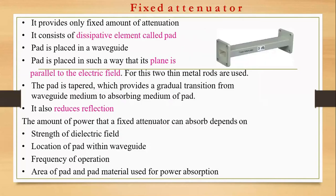For fixed attenuation — say 3 dB — you will only get that 3 dB of attenuation. Suppose I give an input of 32 dB as the input power being transmitted. When I take the output across the output side, I should be getting 3 dB less — so for a 32 dB input, I'll be getting 29 dB output, meaning there is 3 dB attenuation. You have three experiments based on this attenuator and you will be able to measure the power level in the lab.